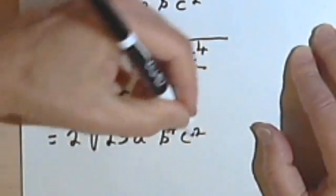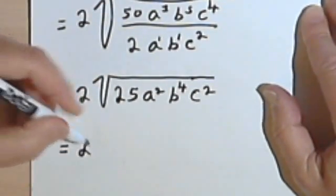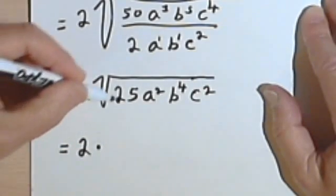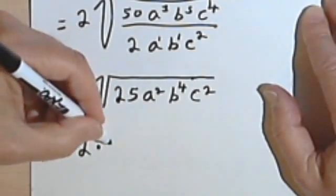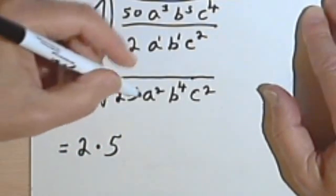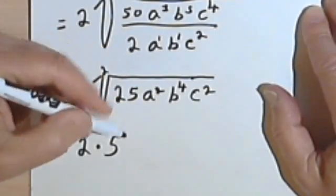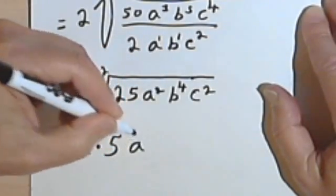Now this should be really easy to simplify, so I'm going to have 2 times the square root of 25 is 5. The square root of a squared, dividing the 2 index into this 2, I just get a 1. So that's an a.